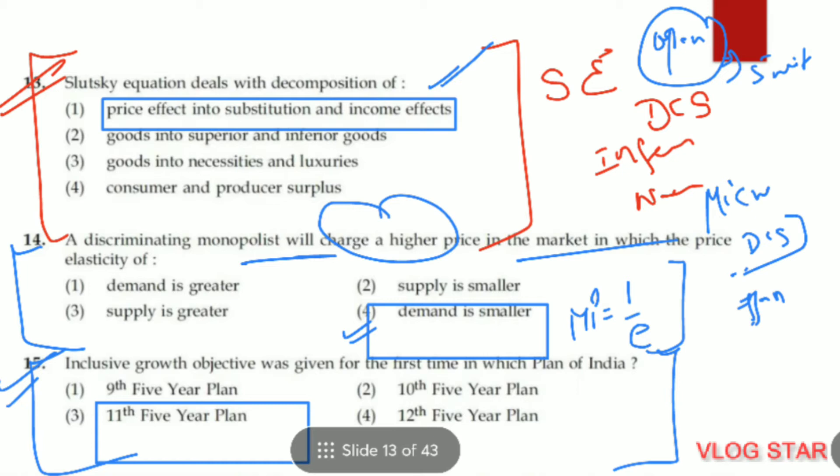Question number 15. The inclusive growth objective was given for the first time in the 11th Five-Year Plan, which ran from 2007 to 2012. Its objective was 'faster and more inclusive growth.' The 12th Five-Year Plan objective was 'faster, sustainable and more inclusive growth' — the word 'sustainable' was added.